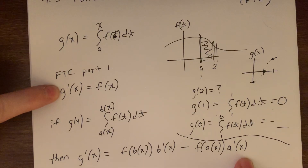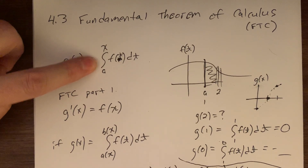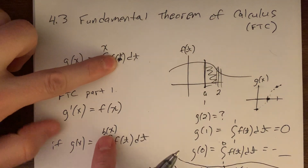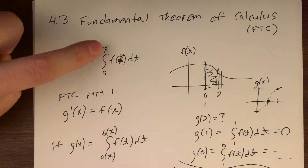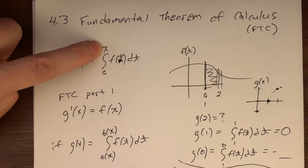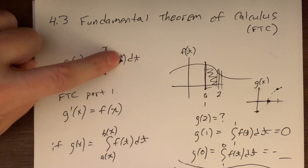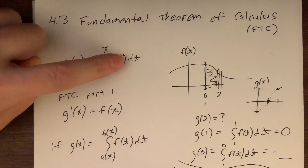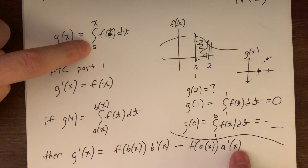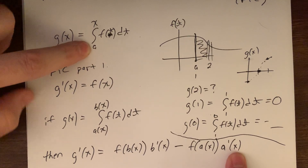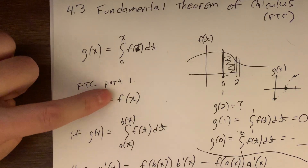Let's go back to the more basic version and see how this leads to f of x. Applying the full form: x goes in for t the way b of x was going in, giving f of x, times the derivative of x, which is 1. So that becomes f of x times 1. Minus: a is just a number, so plugging a in for t gives f of a, times the derivative of a, which is zero. So f of x times 1, minus f of a times 0, connects back to f of x.